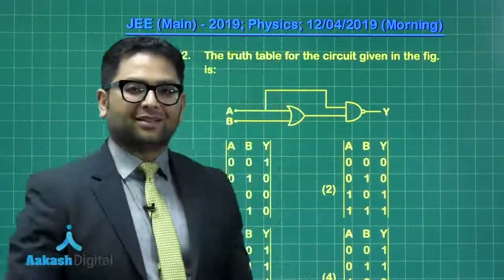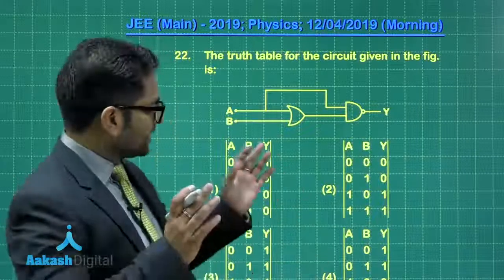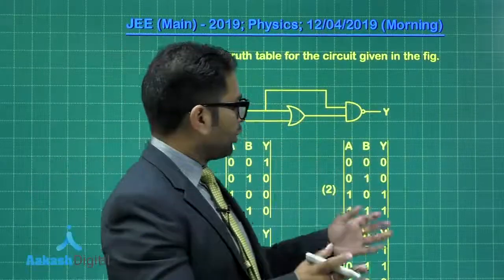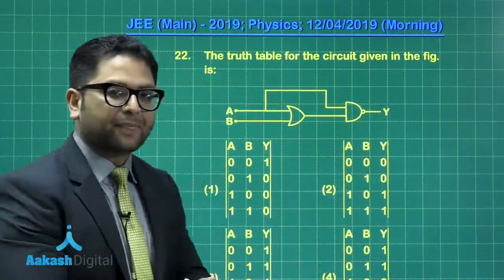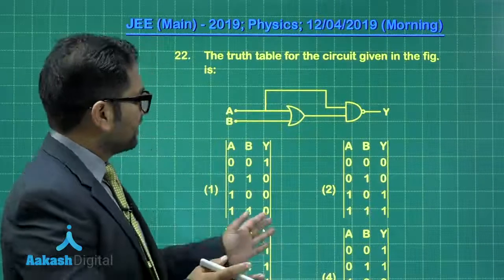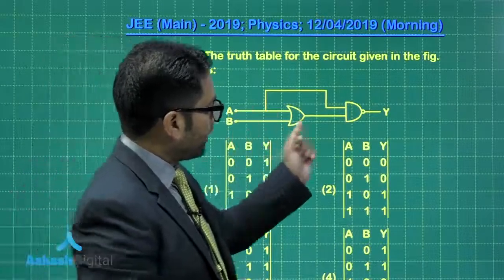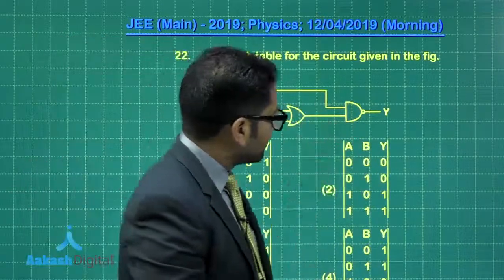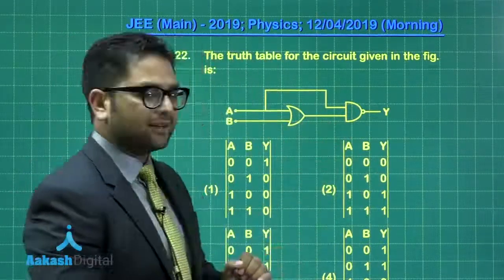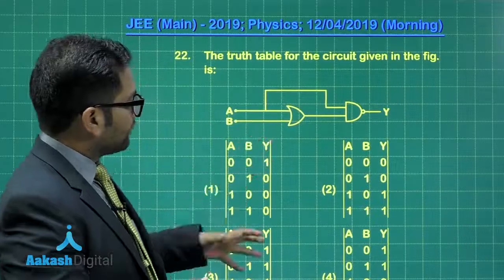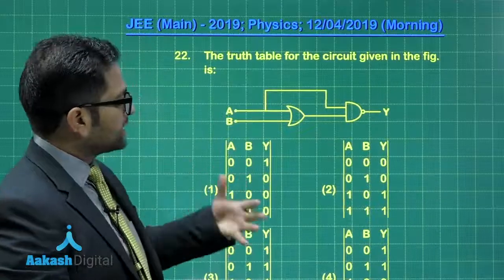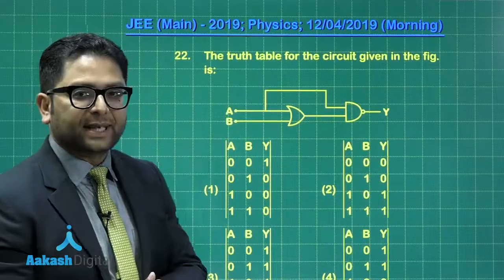This logic gate problem is from the semiconductor chapter of JEE. It is a combination of OR and NAND gates, and based on this arrangement we need to figure out which is the correct truth table.